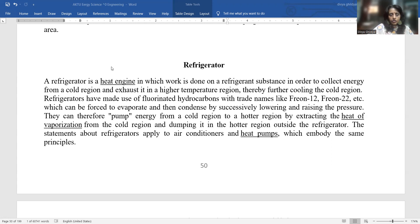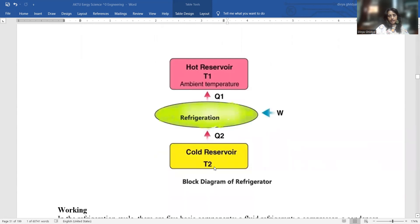Basically, a refrigerator is like a heat engine, which works by doing work on the refrigerant substance to collect energy from a cold region and exhaust it in the higher temperature region, thereby further cooling the cold region. They can pump energy from cold region to hot region by extracting heat.